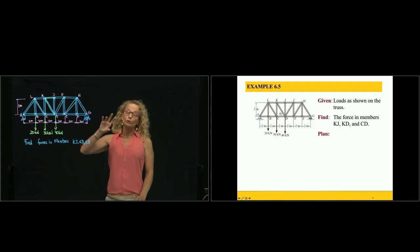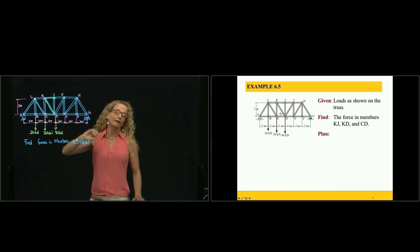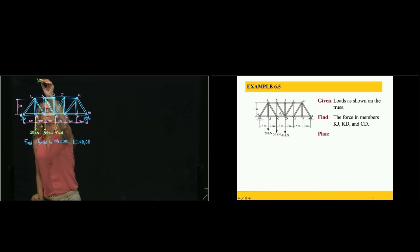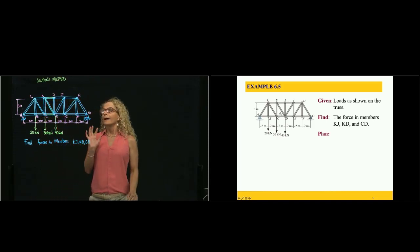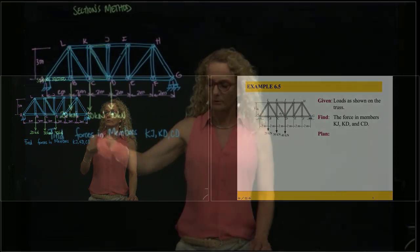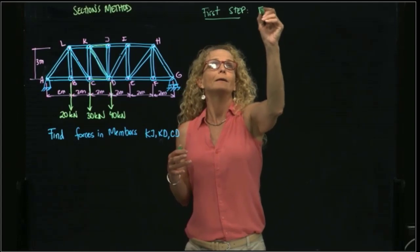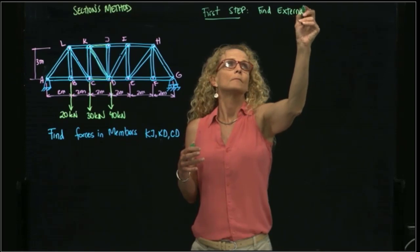Since there are many joints and we want to find the forces in members that are inside the truss, I will use the method of sections. I will cut the truss where I want to find the forces in the members. The first step of the method of sections is to find the external reactions.